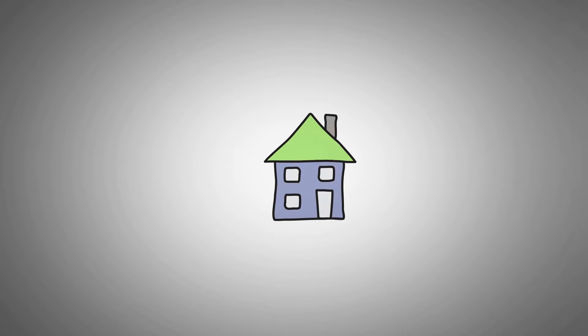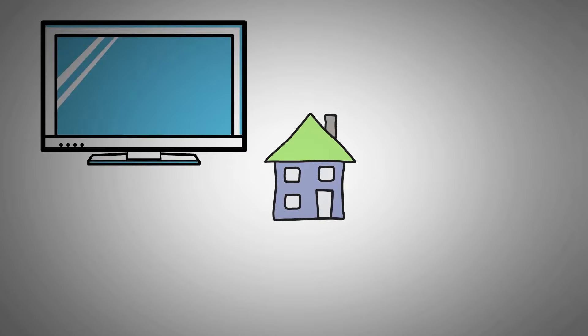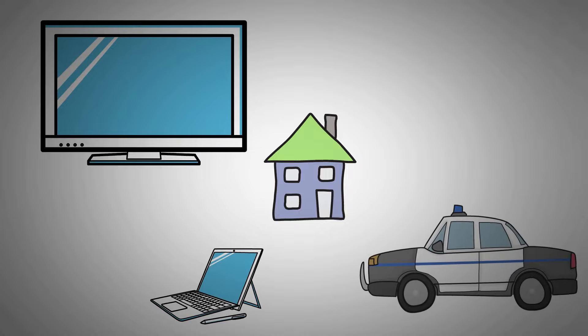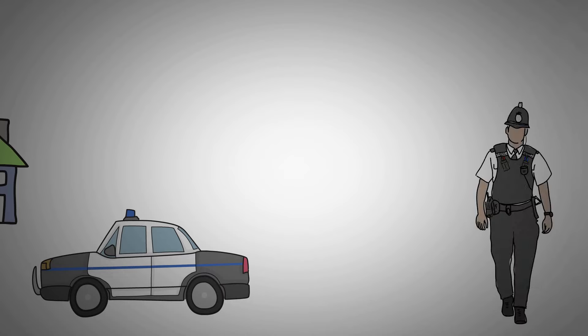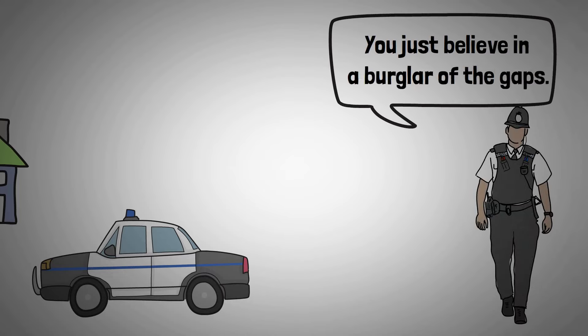if I were to come home and my back door was kicked in, my house was trashed, and my TV and my laptop were missing, I'd call the cops. If the police came and said, you only believe in a thief because you haven't yet discovered a naturalistic explanation for the disappearance of your expensive electronics, I'd be like, are there hidden cameras somewhere? Am I being punked? Where's Ashton?